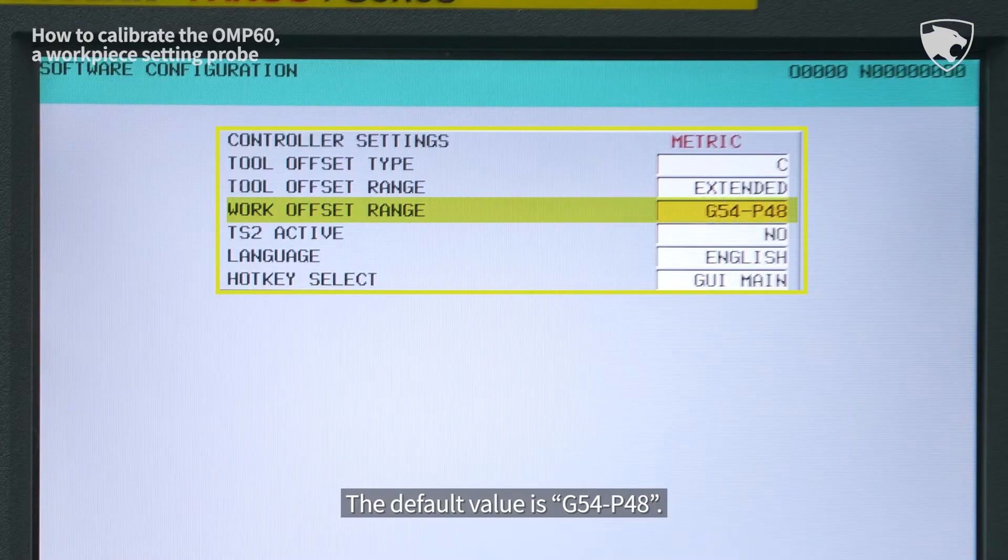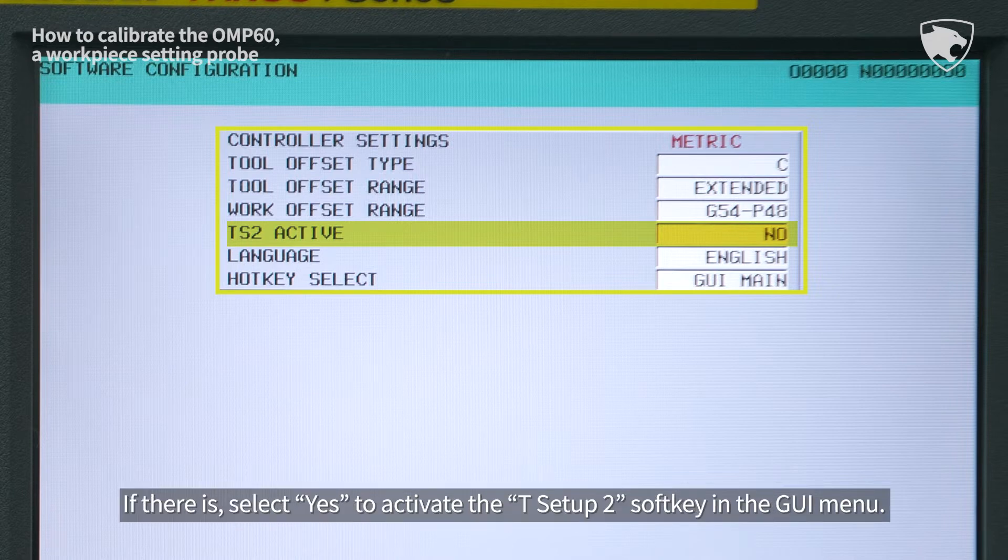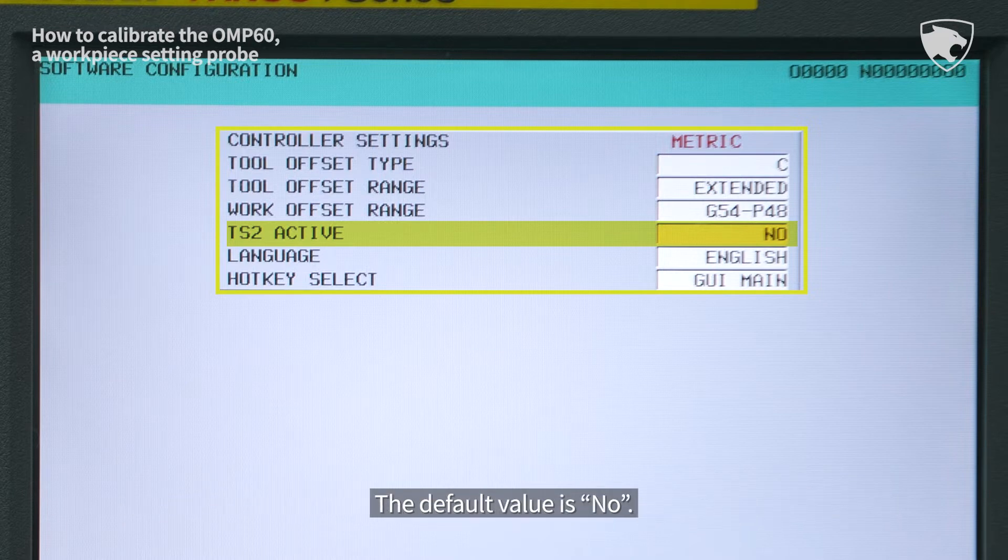T-S2 activate indicates whether there is a second tool measuring device. If there is, select Yes to activate the T-Setup2 soft key in the GUI menu. The default value is No.